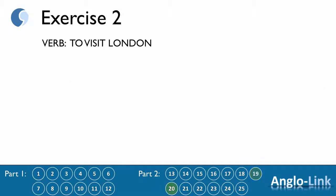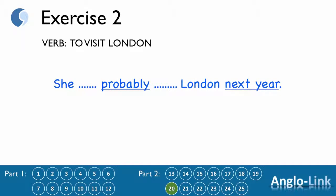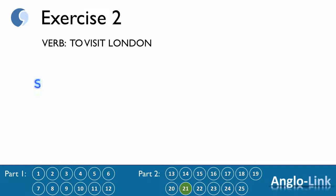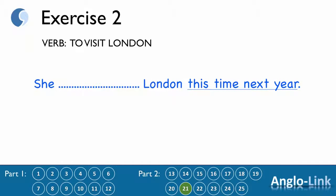Number 20: 'She ___ probably London next year.' Answer: 'She will probably visit London next year.' Future simple. Number 21: 'She ___ London this time next year.' Answer: 'She will be visiting London this time next year.' Future continuous.